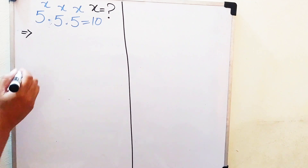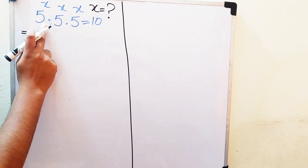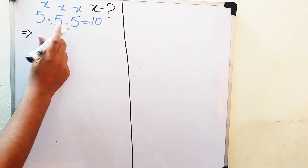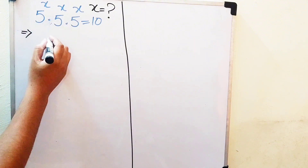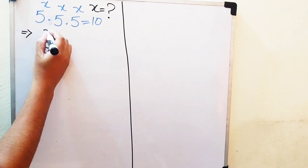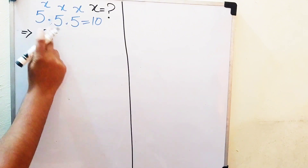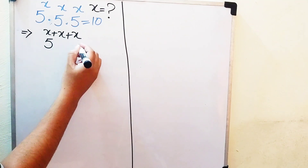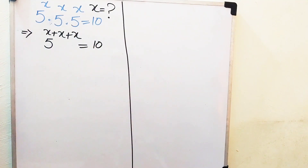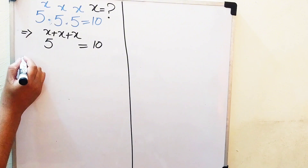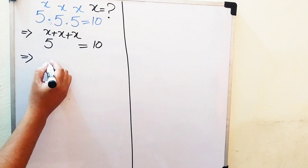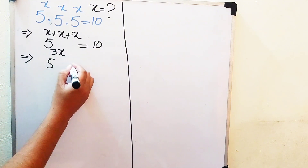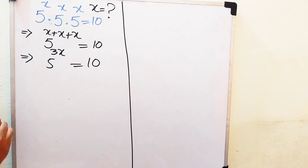The very first step: you can see here these are three numbers which are multiplied by each other. So here we add their exponents according to the exponential law. Since the bases are the same, we add the exponents, and after adding these three exponents it will be written as 5 to the power of 3x equals 10.